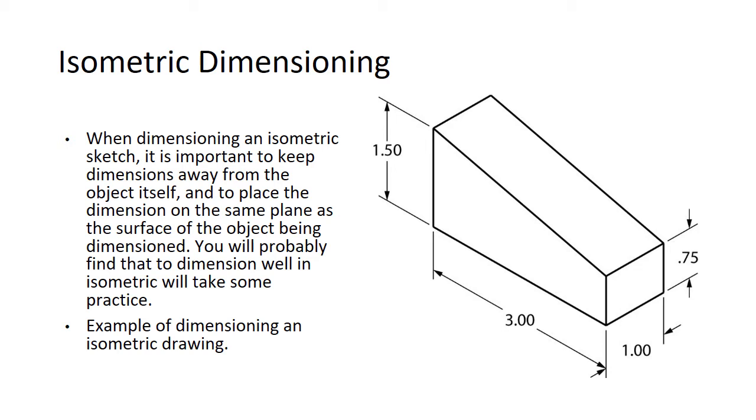Isometric dimensioning. When dimensioning an isometric sketch, it is important to keep dimensions away from the object itself and to place the dimension on the same plane as the surface of the object being dimensioned. You will probably find that dimensioning in isometric will take some practice. We're not going to do that, but we're just reading. So you can see this is an isometric drawing and it's got dimensioning on it. So here's an example of isometric drawing being dimensioned.